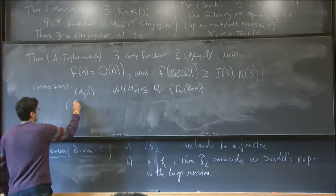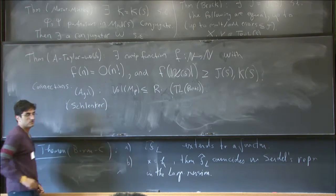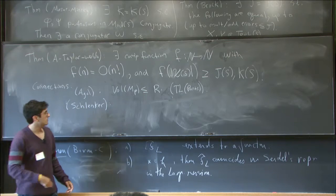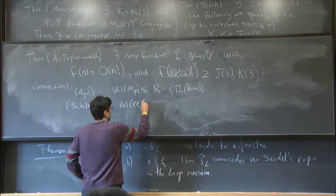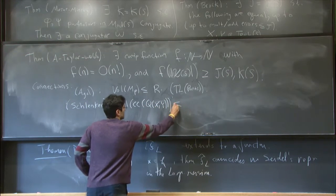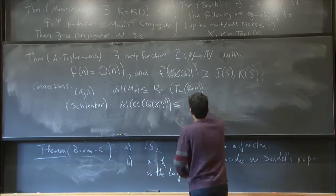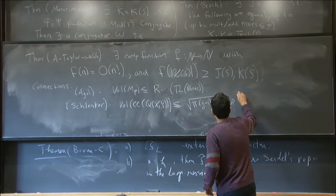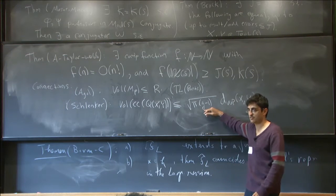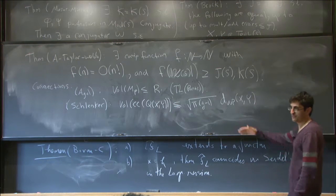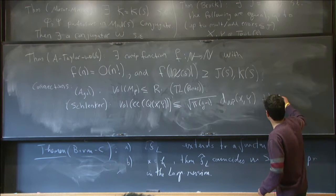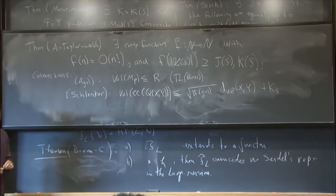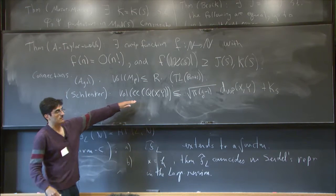There's more recent work of Schlenker that relates volume to Weil-Petersson distance more explicitly, in the setting of a quasi-Fuchsian 3-manifold: the volume of the convex core of Q(xy) is at most √(π(g−1)) times the Weil-Petersson distance between x and y — stated for closed surfaces of genus g — plus some additive constant. This is much better than factorial; it's square root. And related to this is even more recent work of Kojima-McShane and Brock-Bromberg giving similar bounds in the setting of mapping tori.